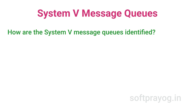How are the System V message queues identified? As an aside, this video is about System V message queues and there is one more type of message queue which is the POSIX message queues — there is another video for POSIX message queues. Message queues, semaphores, and shared memory are collectively referred to as inter-process communication mechanisms. There are two categories: the traditional System V and the newer POSIX. In this video, I will be talking about the traditional UNIX System V message queues.